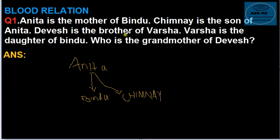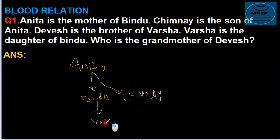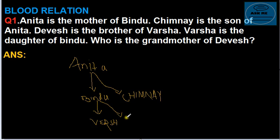Then David is the brother of Bursa, and Bursa is the daughter of Bindu. So here, Bursa is the daughter of Bindu. And since David is the brother of Bursa, that means David is also the son of Bindu. So you can write this as David.